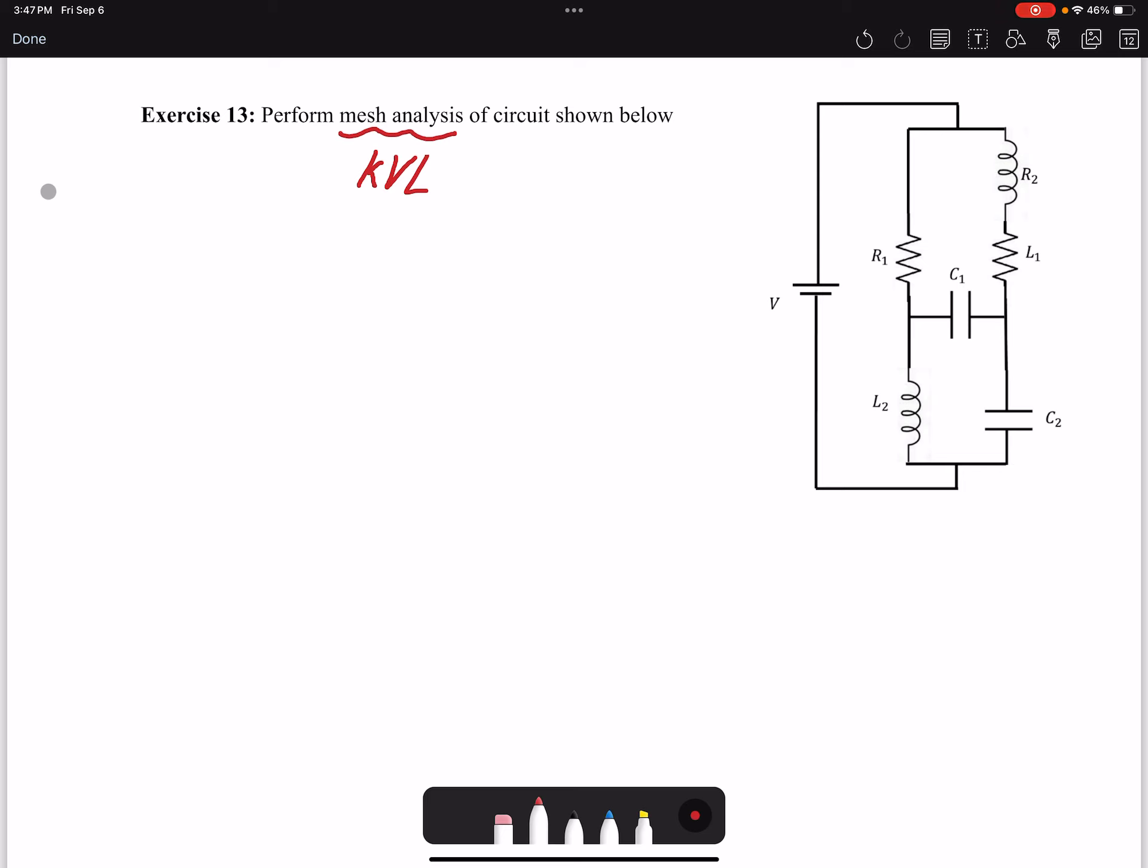We have three loops, so we're going to have three currents. I'm going to draw here, I'm going to call this I1, this loop I'm going to call it I2.